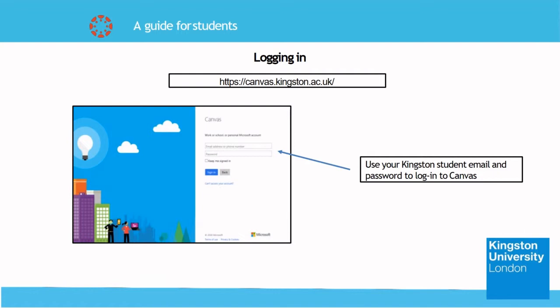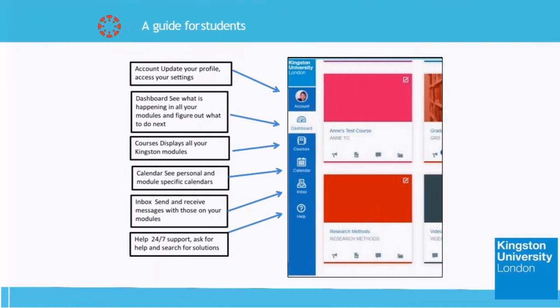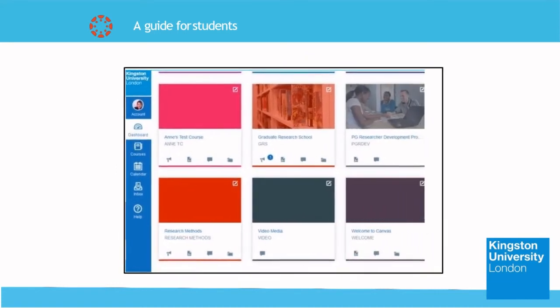When you click sign in, you should immediately be directed to the dashboard page, which is the first page you should see after logging in. On the dashboard you will see module cards which also display notifications on upcoming events, feedback and announcements. On the left you should also see several tabs on the navigation list, each for different features within Canvas. For instance, under accounts you can update your profile and access your personal settings. The dashboard shows what's happening in your modules. Under courses you can see all your Kingston modules.